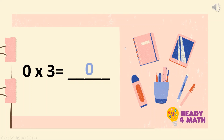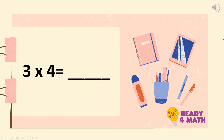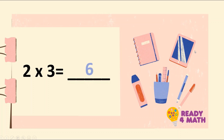Let's go to the next one: 3 times 4. Let's skip count: 3, 6, 9, 12. The answer is 12. Very good. What about 2 times 3? Skip count now: 3, 6. So the answer is 6.